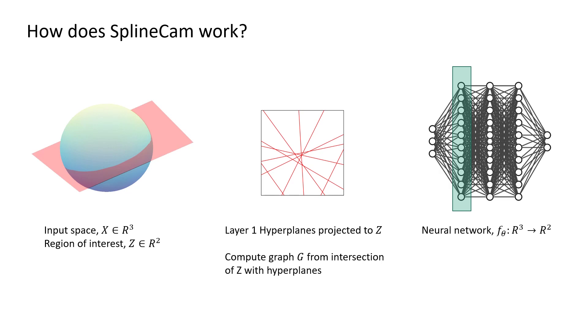Following that, we compute the graph G, formed by the intersection of these hyperplanes with Z.